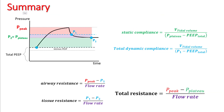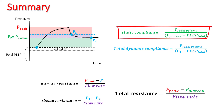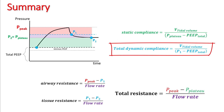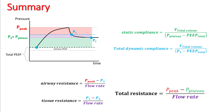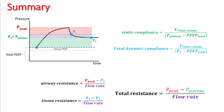In summary, after you have performed an inspiratory pause, calculate P1, P2, and intrinsic PEEP. Static compliance is given by tidal volume divided by plateau minus total PEEP. Dynamic compliance is given by tidal volume divided by P1 minus total PEEP. Airway resistance is given by peak pressure minus P1 divided by flow rate. Tissue resistance is given by P1 minus P2 divided by flow rate. Total resistance in the circuit is given by peak minus plateau divided by flow rate.